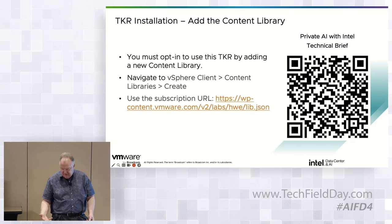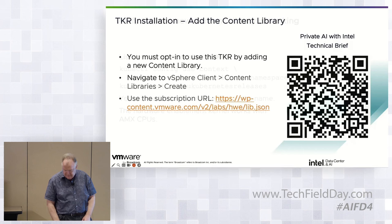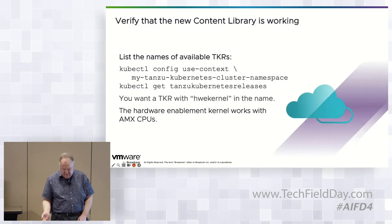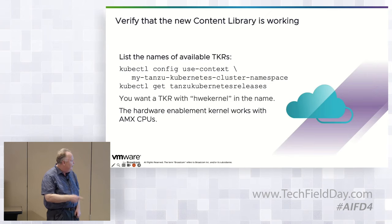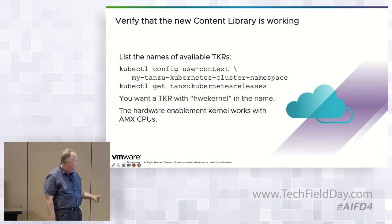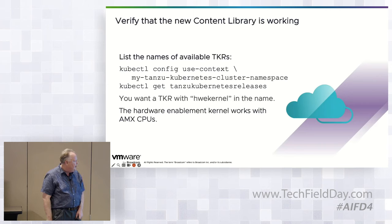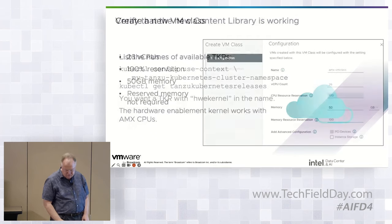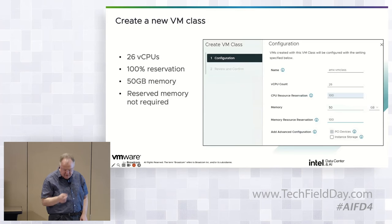That will download the new TKR onto your vCenter and make it available for deploying Kubernetes. To verify the new content library is working, run 'get Tanzu Kubernetes releases' or TKRs — it'll give you a list of all TKRs available on the system. You want the one with 'hwe-kernel' in the name, as that's the hardware enablement kernel that works with AMX CPUs. Then you want to create a new VM class to use this new image.